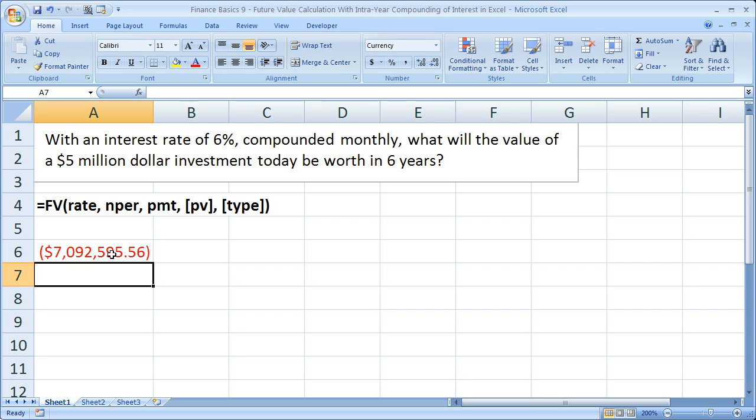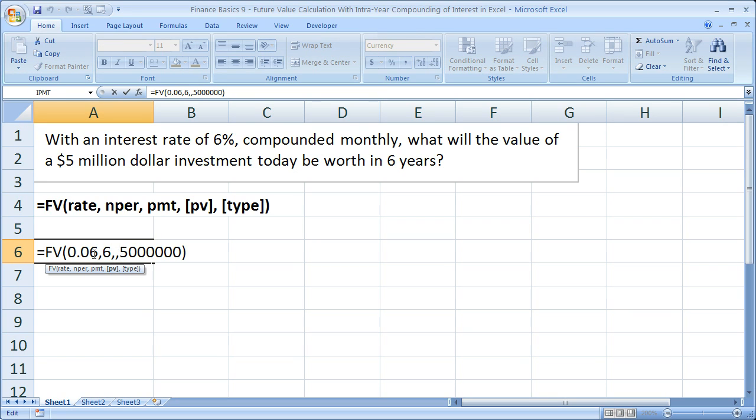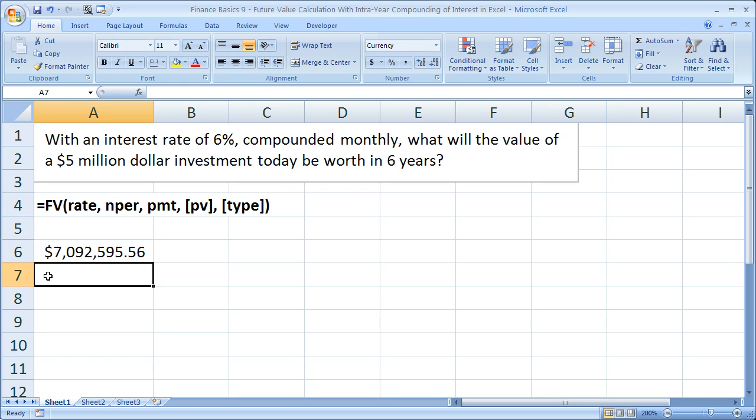Now this comes up negative. I've talked about that before. The technical way to fix it is put a negative sign in front of the present value. However, in Excel, I find it easier to put a minus sign in front of the future value function. So that would be the answer.